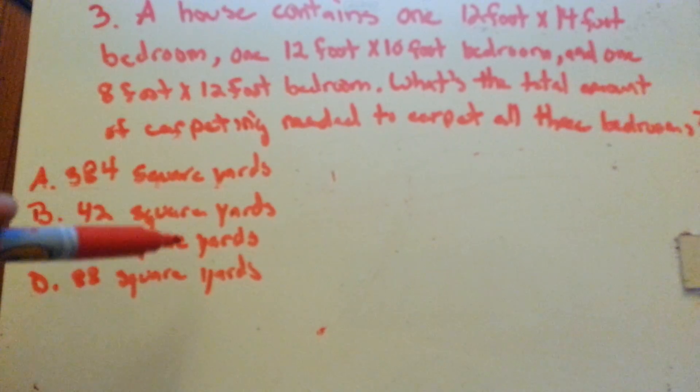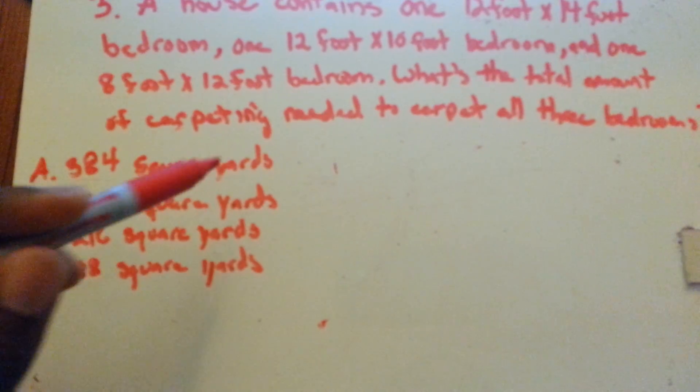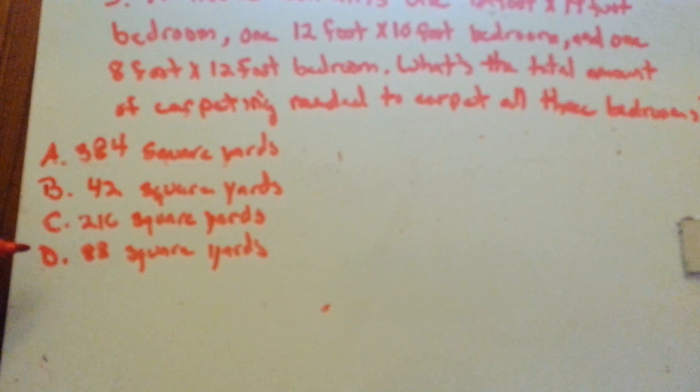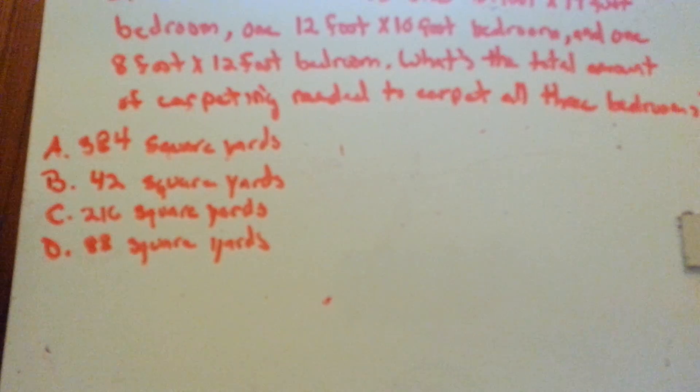So what we're going to have to do is find the total area for each of the rooms, add it together, and then divide to get the answer from square feet into square yards.